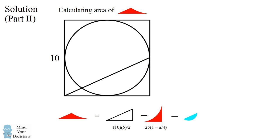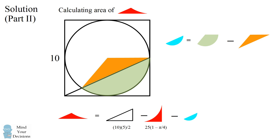So we just have one more piece to solve for. This is the most complicated part. We'll again consider it by subtraction. We'll consider this sector of the circle. We'll then remove out this isosceles triangle, and that'll leave us the area of the piece we want. So the region we want is equal to the area of a sector of the circle minus the area of this isosceles triangle.